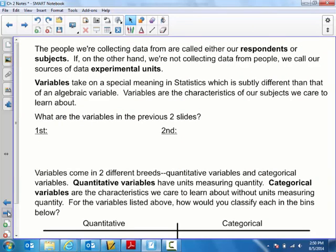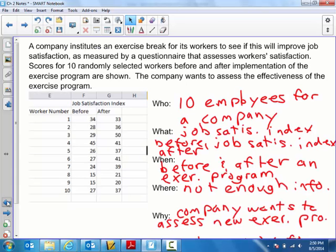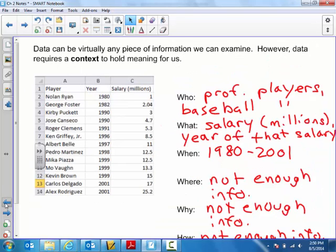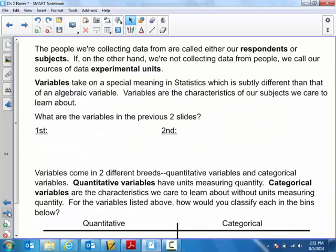We've tried to establish a context for data in the case of individuals. Let's define some terms. The people we're collecting data from are called either our respondents or our subjects. Looking back at the last slide, we had 10 respondents or subjects. In the prior slide, we had 13 respondents or subjects in the first example. If we're not collecting data from people, we would call the items we care to analyze experimental units. For instance, if I want to collect data on students at Yorktown, you'd be respondents or subjects. If I want to learn about the desks in a classroom, those would be experimental units.